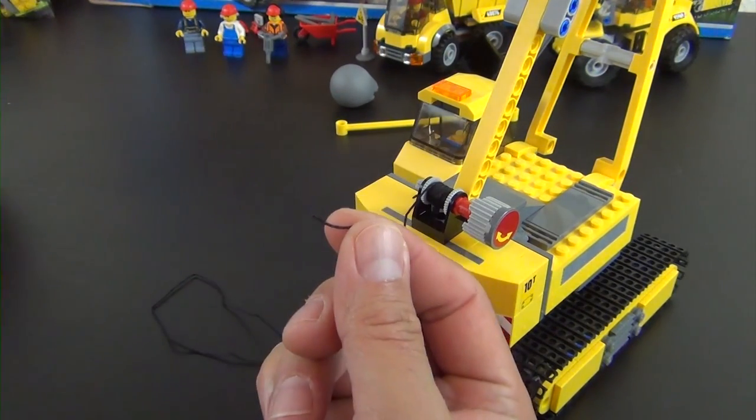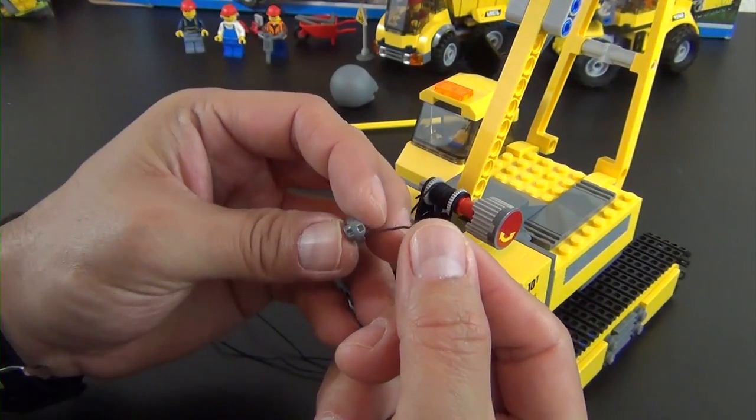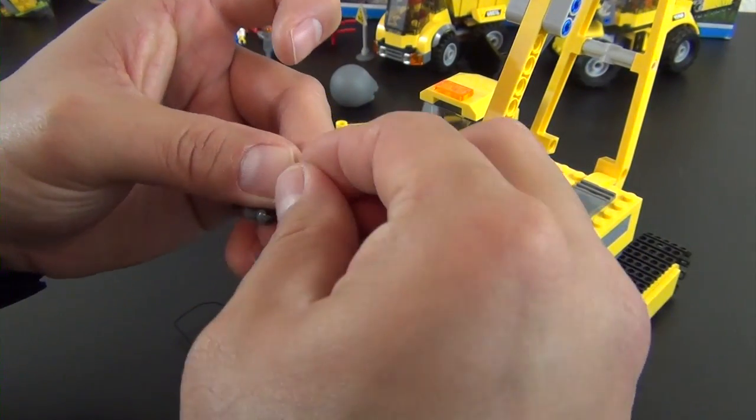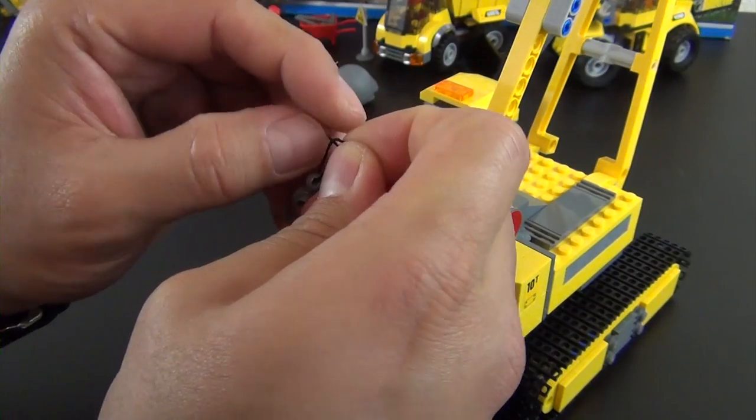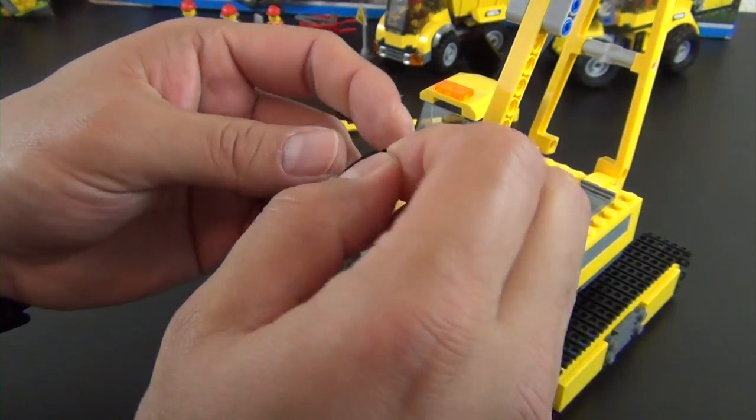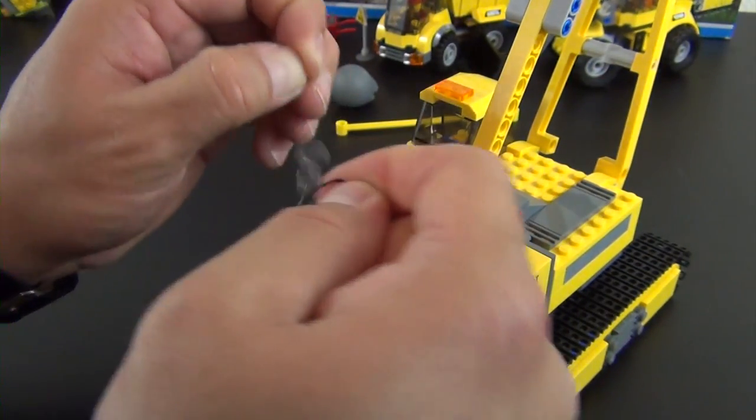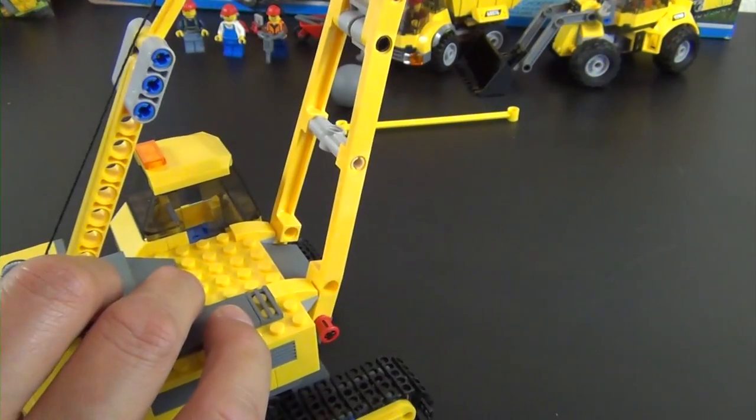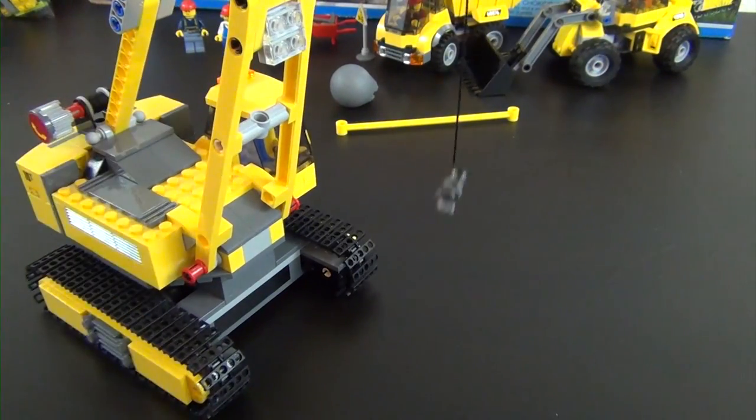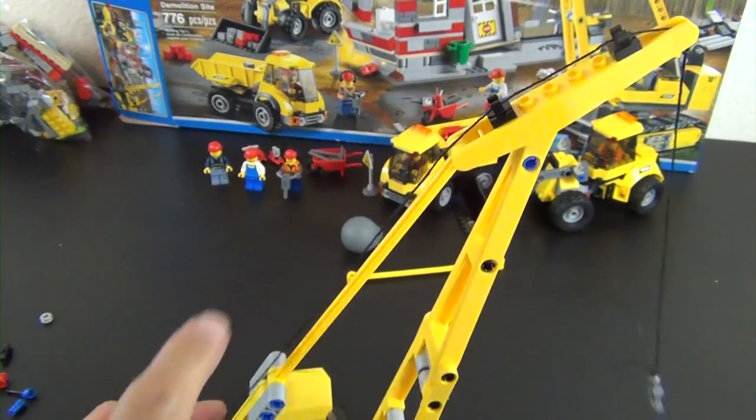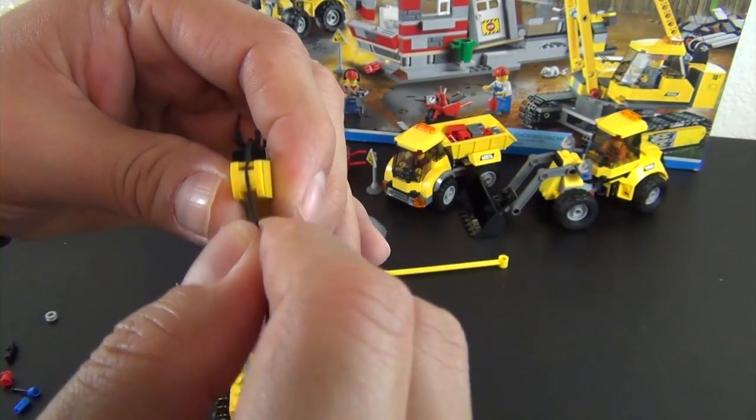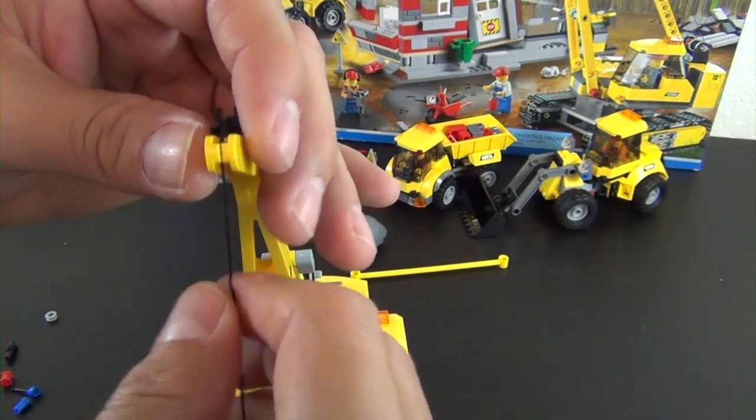Then on the end here we have the hook. We're going to thread through the little hole and give it a little knot. Actually going to double up that knot. Basically what you do is you bring it all the way up through this piece over the top. A little spot there that you can push the string through, then once it's through it kind of holds it in place. We can bring it up a little bit more and attach our little wrecking ball.